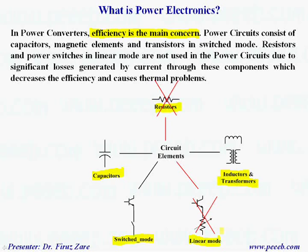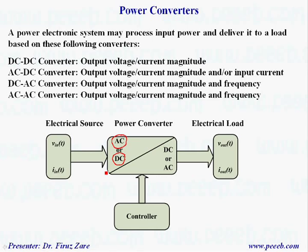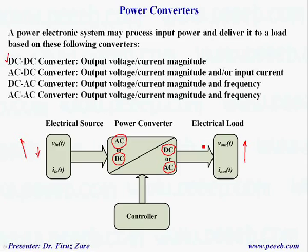A power electronic system may process input power and deliver it to a load based on these converters. The input source can be either AC or DC, and the output can be either DC or AC, giving four different combinations. The first is the DC-DC converter. For different applications, we can control the output magnitude — for example, if the input voltage is low from a battery, we can boost the voltage. Or if the input voltage is high, coming from a rectifier, and we need low voltage for an electronic system, we can reduce the voltage magnitude.